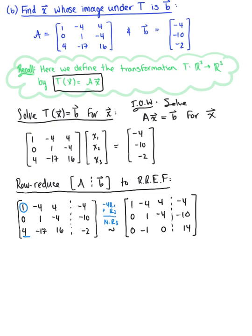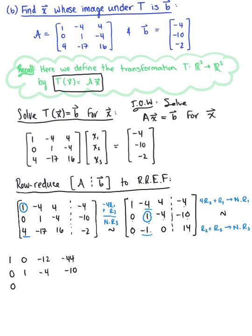Our first column is set. Moving to the second pivot position, we eliminate the entries above and below it in two steps: 4×(row 2) + row 1 gives the new row 1: (1, 0, −12 | −44). Row 2 remains: (0, 1, −4 | −10). Then row 2 + row 3 gives the new row 3: 0, 1−1=0, −4+0=−4, and −10+14=4.